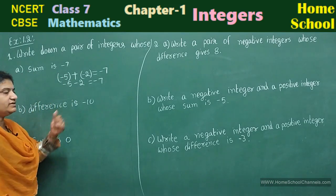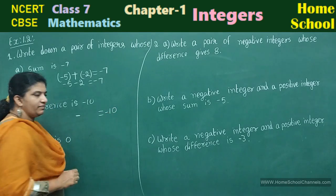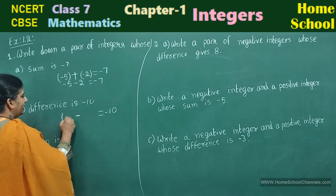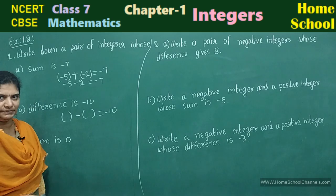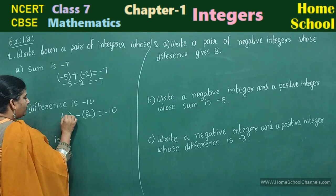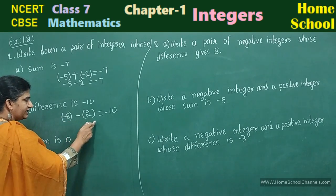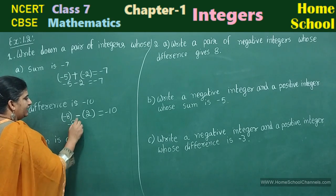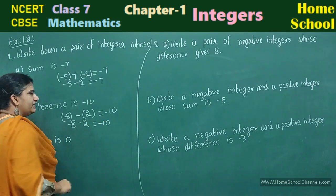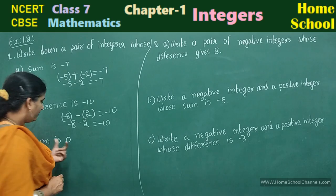Option B: difference is minus 10. Difference means minus — the result should be minus 10. Take two integers such that their difference gives minus 10. Here already negative, so let me take one positive value and one negative value: minus 8 and 2 are the two integers. Minus 8 minus into plus 2 — both are negative. Take the negative sign and add the numbers. You need to write only the first line; the second line is just simplification.